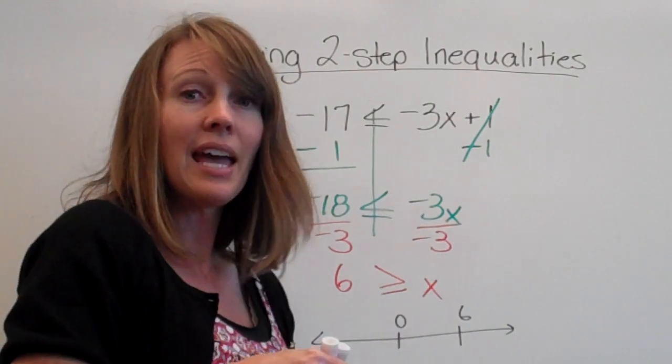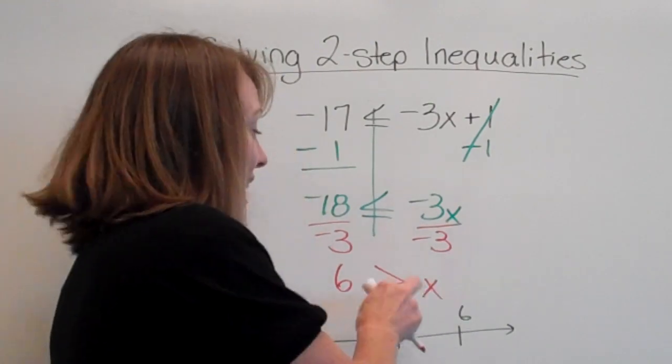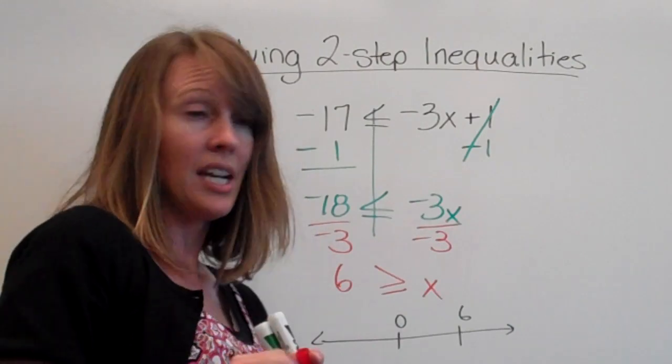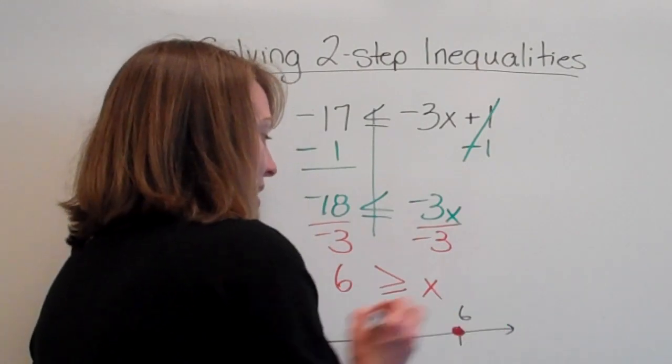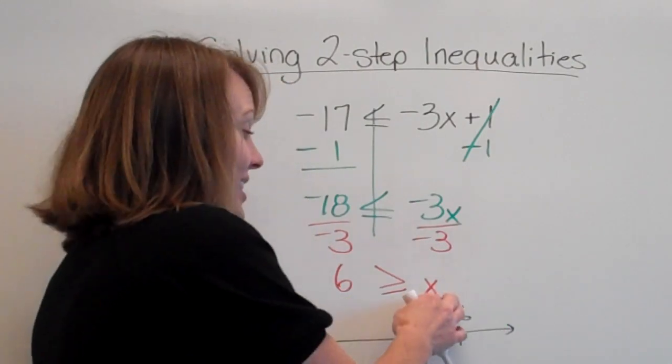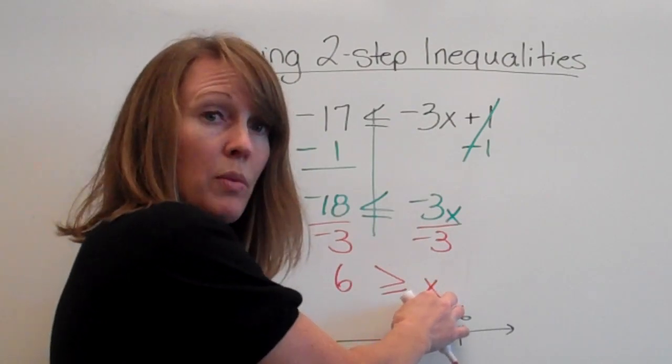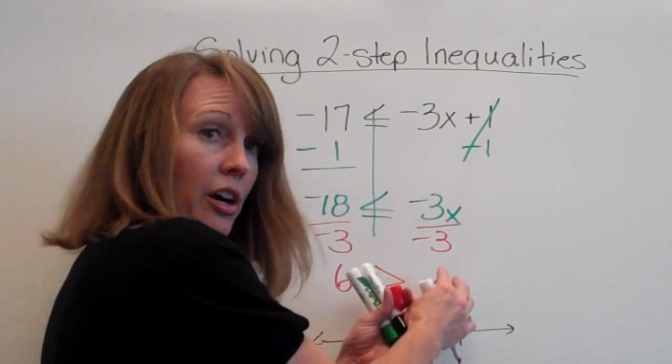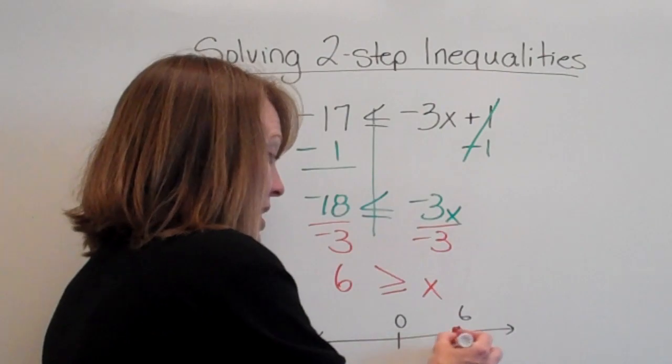We know that it's going to be a closed hole because 6 can be less than or equal to 6. So we can touch that. And the x is on the small side, so we want all the numbers that are smaller than 6. Smaller would be this direction.